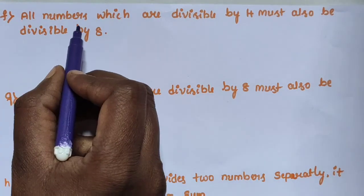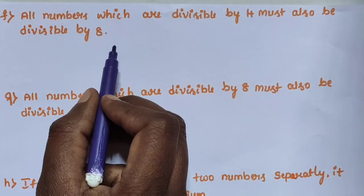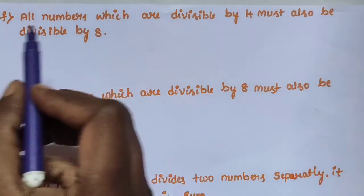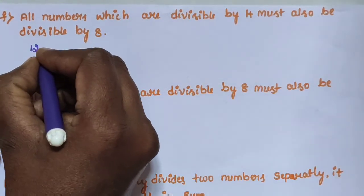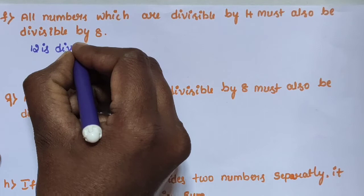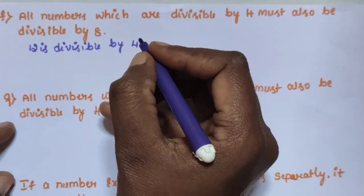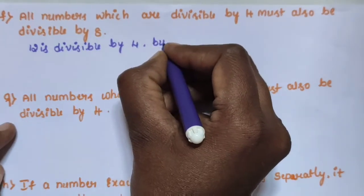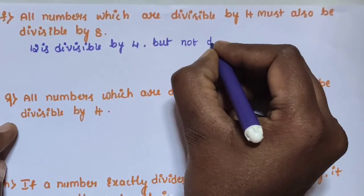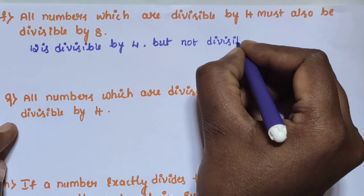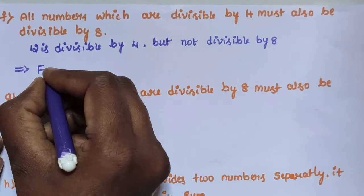Sub-question F: all numbers which are divisible by 4 must also be divisible by 8. This statement is false, because 12 is divisible by 4 but not divisible by 8.